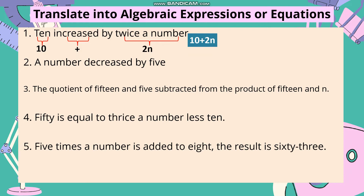Number 2: 'A number decreased by 5.' 'Number' is a variable, so we place n first. 'Decrease' means minus. Then 5. So our mathematical symbol for number 2 is n minus 5.